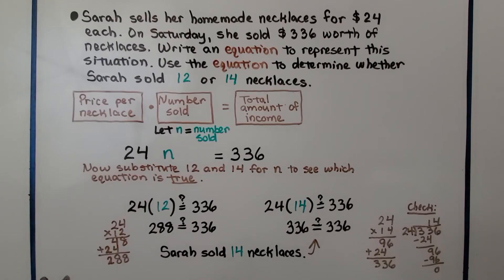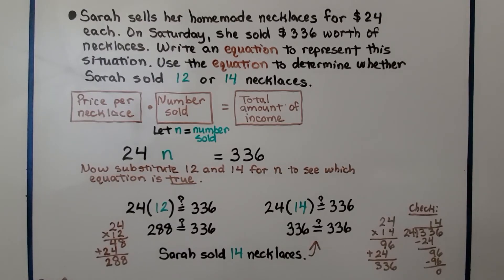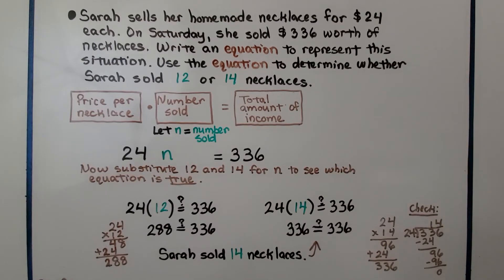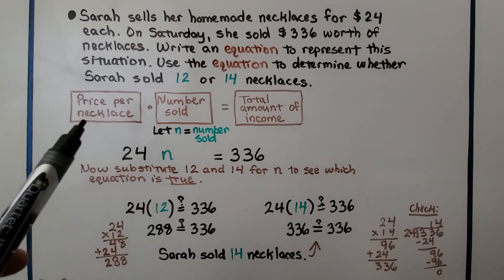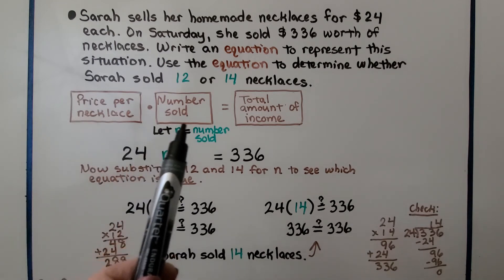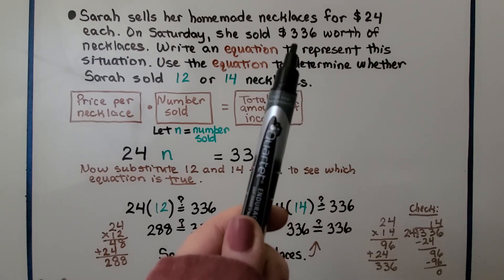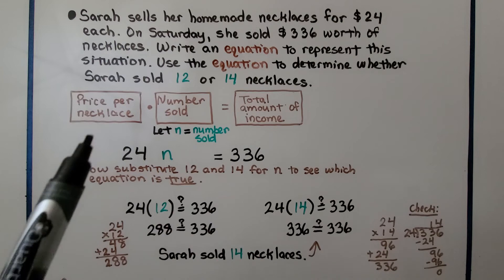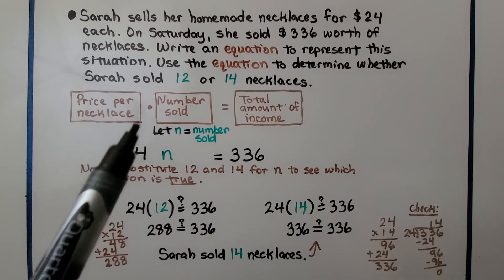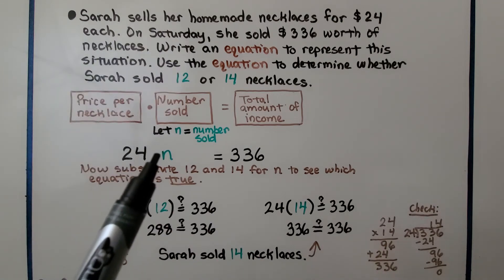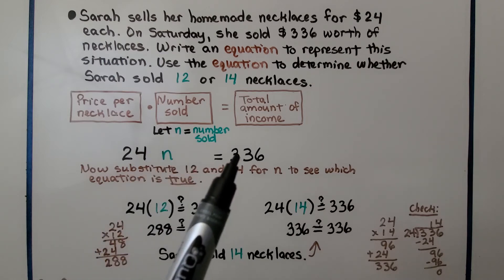Sarah sells her homemade necklaces for $24 each. On Saturday, she sold $336 worth of necklaces. Write an equation to represent this situation and use the equation to determine whether Sarah sold 12 or 14 necklaces. We have the price per necklace times the number that she sold is going to equal the total amount of income she made, the $336. We've got 24, because that's the price for each, times some number n is equal to $336.